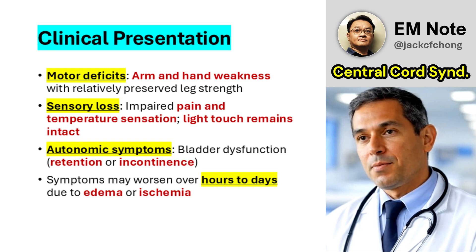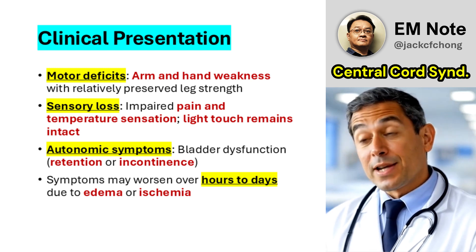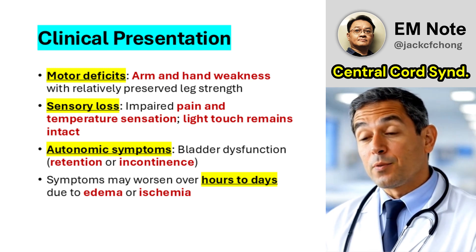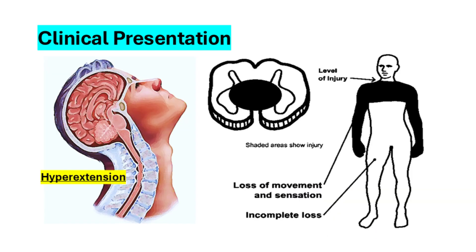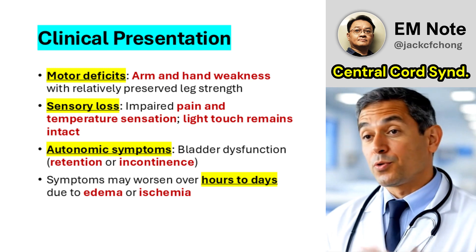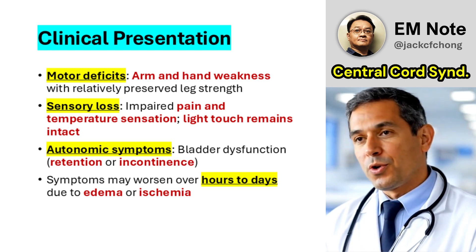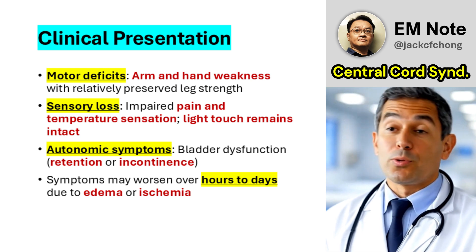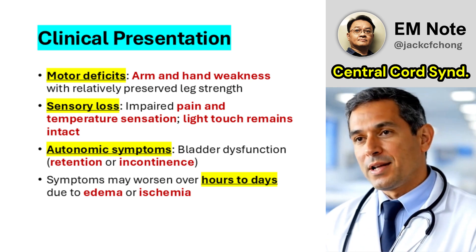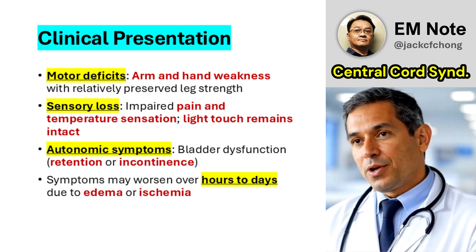Patients with central cord syndrome exhibit distinct neurological deficits. Motor dysfunction includes weakness and loss of fine motor control in the arms and hands, with relative preservation of leg function. Sensory deficits present as dissociated sensory loss, where pain and temperature perception are impaired below the injury site, while light touch and proprioception remain intact.